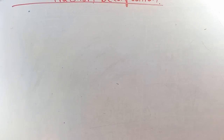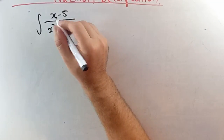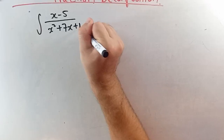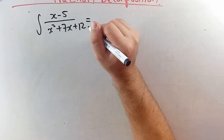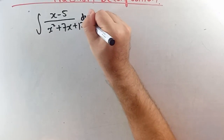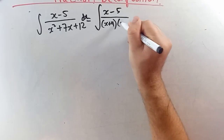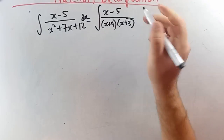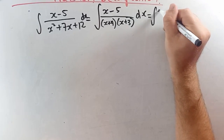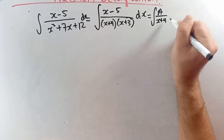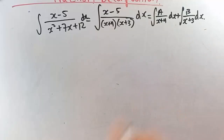The next integral is the integral of x minus 5 over x squared plus 7x plus 12 dx. Factoring the denominator gives x plus 4 times x plus 3. We want to separate this into a over x plus 4 plus b over x plus 3.